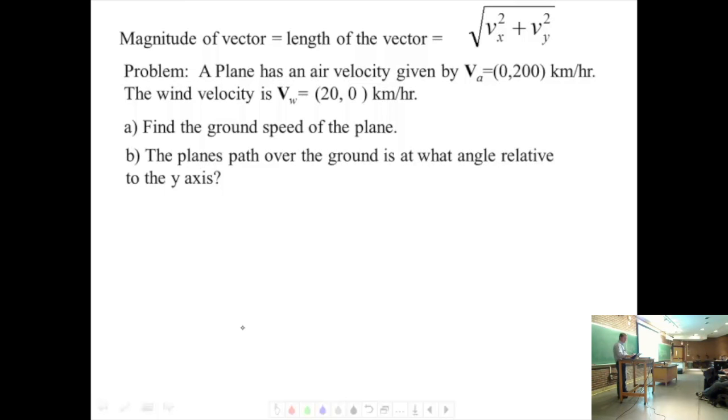So what's my picture? I got an airplane flying like that at 200, and I got wind speed going like that. So that's V wind at 20. That's the actual ground speed, the V sub G, right? The airplane flying in that kind of wind would fly actually like that.